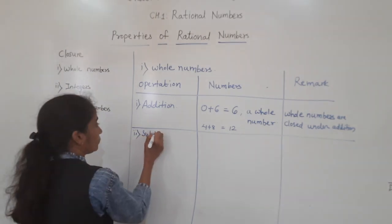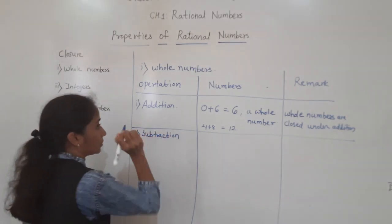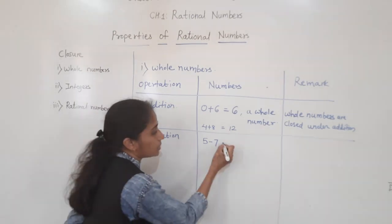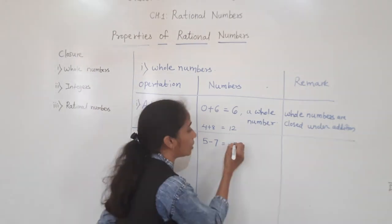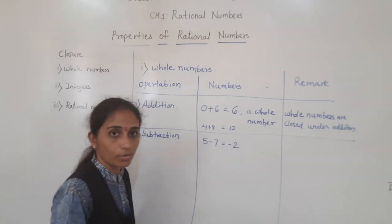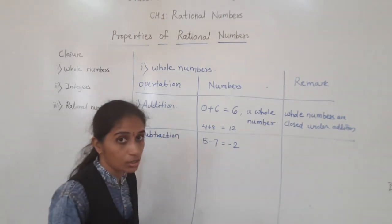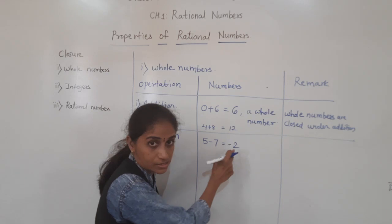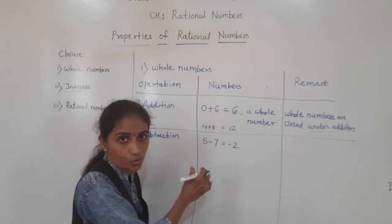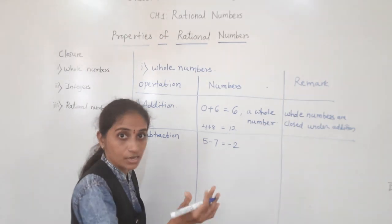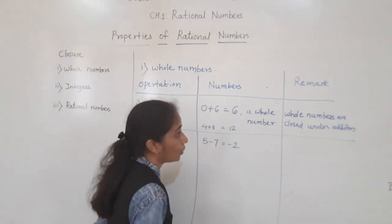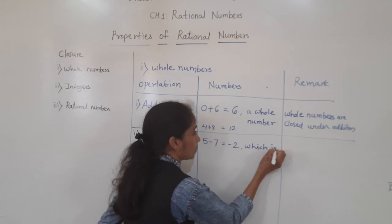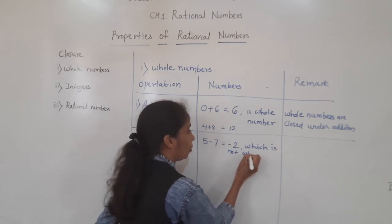Next is subtraction. I will take the example 5 minus 7. What is the answer? We get minus 2. Is minus 2 a whole number? No. Whole numbers are 0, 1, 2, 3, 4, 5, 6 — these are all whole numbers; minus 2 is a negative integer, which is not a whole number.